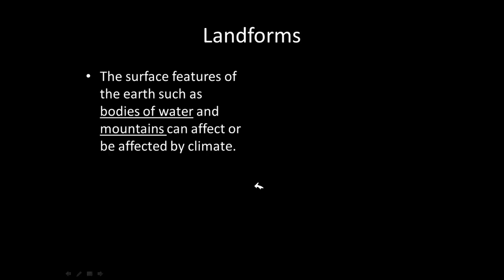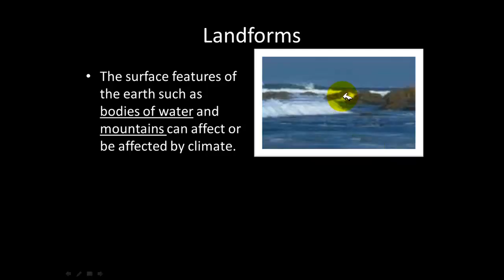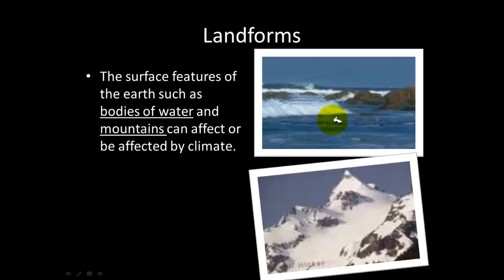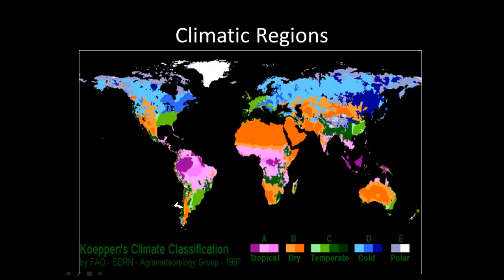Landforms are the next factor affecting climate. Looking at the surface features of the earth — bodies of water and mountains — these can definitely affect climate. Depending on where you live, whether near water or whether wind blows through, that can affect your climate. If you live high up on a mountain, you'll generally be cooler higher up than lower down.